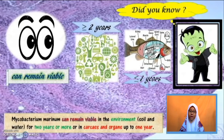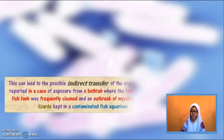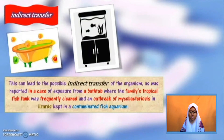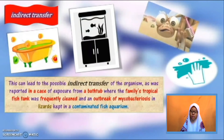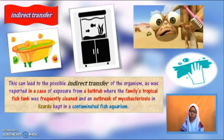Mycobacterium marinum can remain viable in the environment such as soil and water for 2 years or more, or in carcasses and organs up to 1 year. This can lead to possible indirect transfer of the organism, as was reported in a case of exposure from a bathtub where the family's tropical fish tank was frequently cleaned and an outbreak of mycobacteriosis in lizards kept in a contaminated fish aquarium.